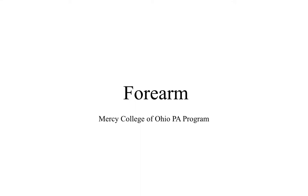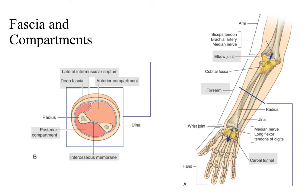Hi students, this is Dr. Waze and welcome to your lecture on the forearm. If you haven't noticed by now, muscles that control a particular part of a limb tend to be located on the part of the limb that is superior to the part that's actually being controlled.